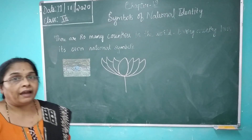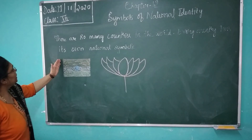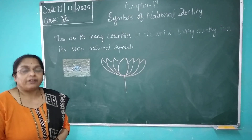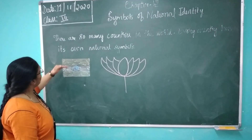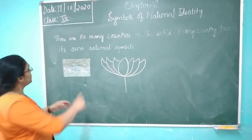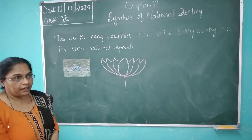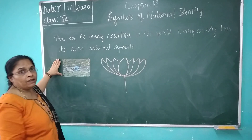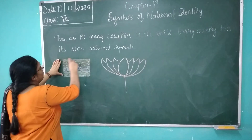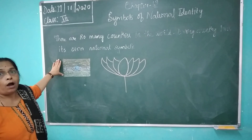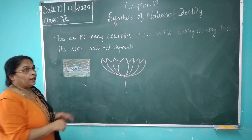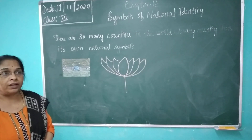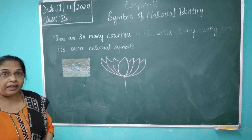First one is the national flag. The Indian national flag is popularly called the Tiranga — that is, three colors. In the center there is the Ashoka Chakra. The topmost part of the flag is saffron, which depicts courage and sacrifice.